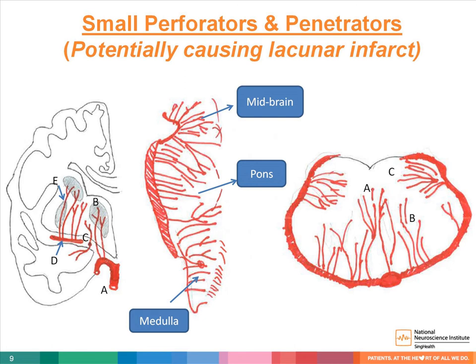At the posterior circulation, as shown in the middle and right diagrams, at the pons level for example, there are A, midline large median arteries, B, paramedian penetrators, and C, penetrating arteries into the lateral tegmentum of the pons. The occlusion of these perforators, either along anterior and posterior circulations, may produce lacunar syndromes.